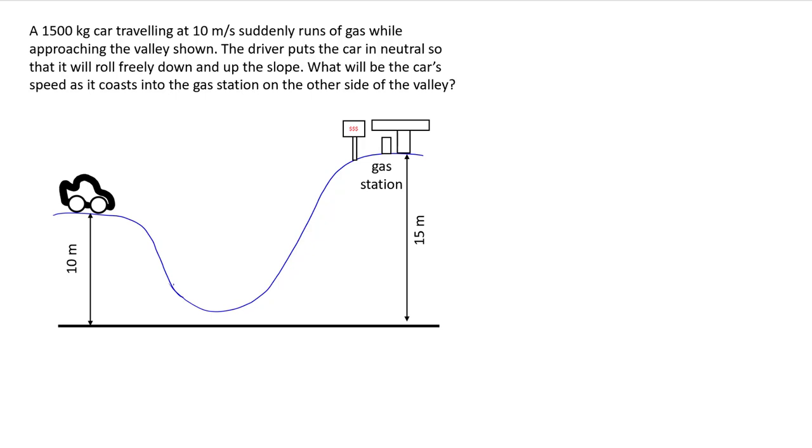So in this question, you basically have a car that's going to roll down the hill and speed up and then climb back up the hill and slow down. And hopefully he'll make it on the other side.